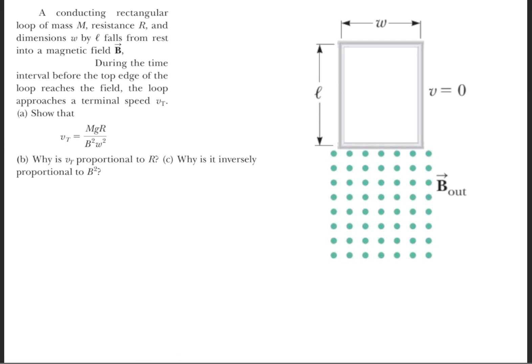Part C asks why the terminal velocity is inversely proportional to the magnetic field squared. Simply put, as the magnetic field decreases, the terminal velocity will need to increase so that it creates a large enough magnetic force to negate the force of gravity.